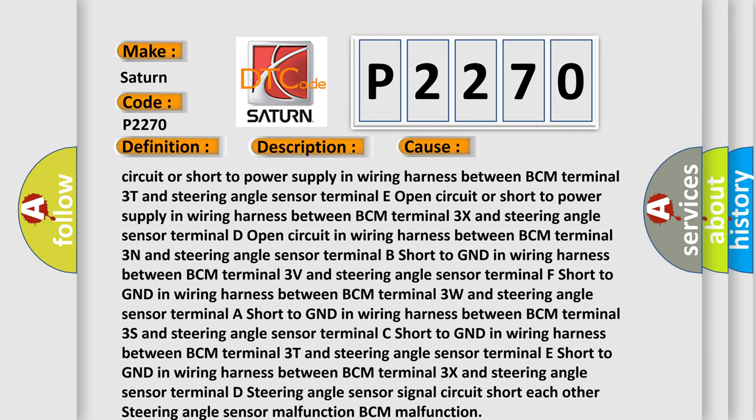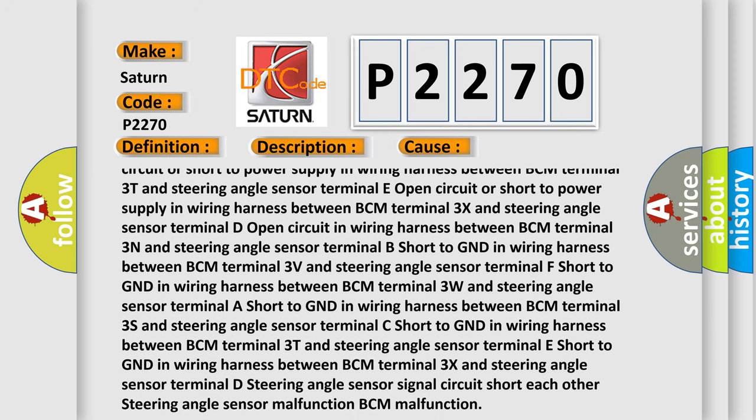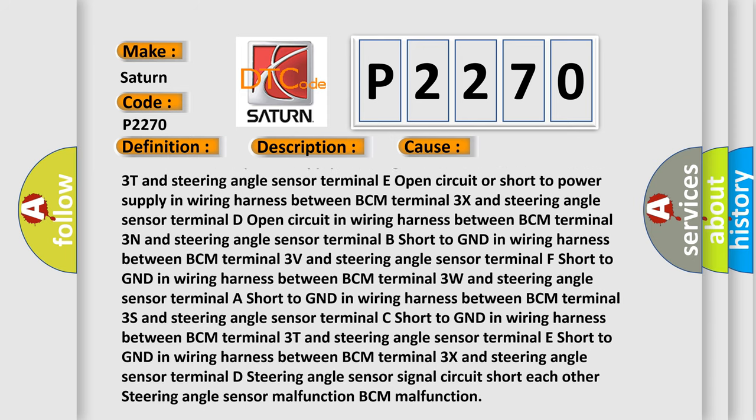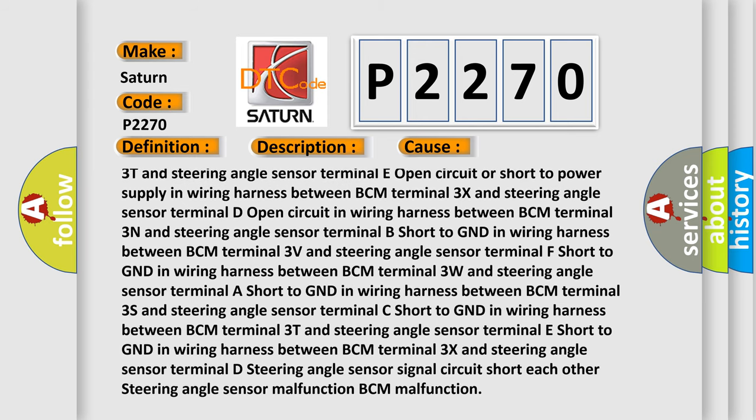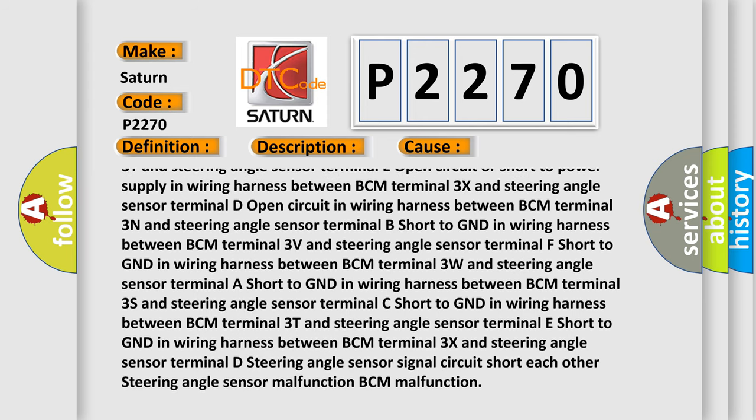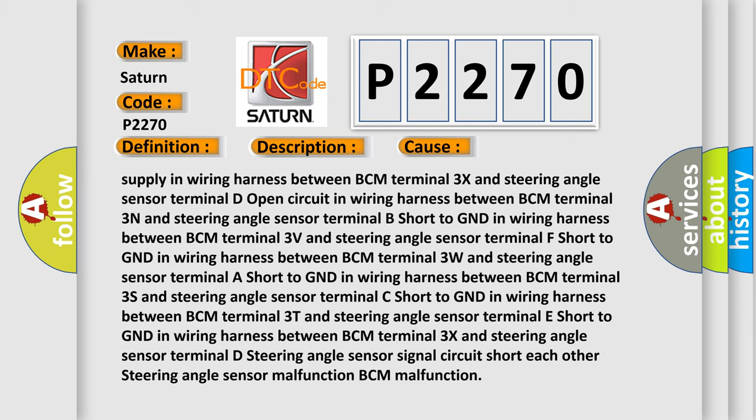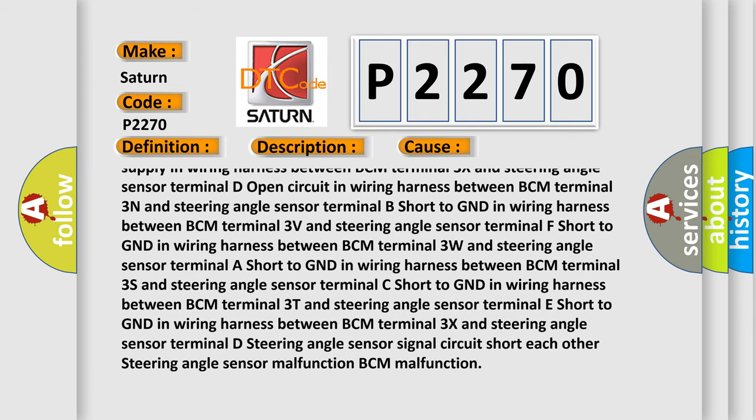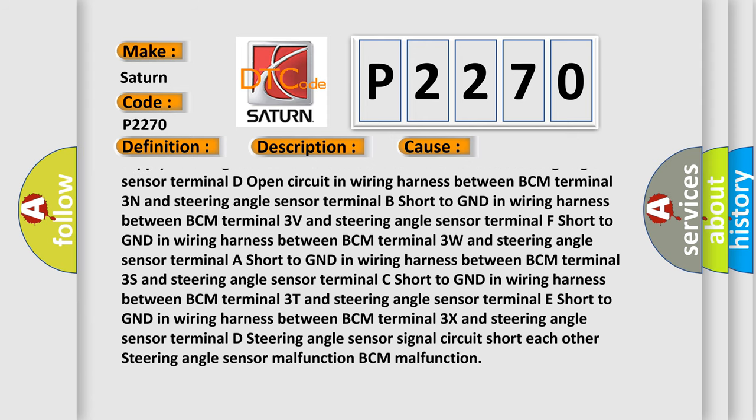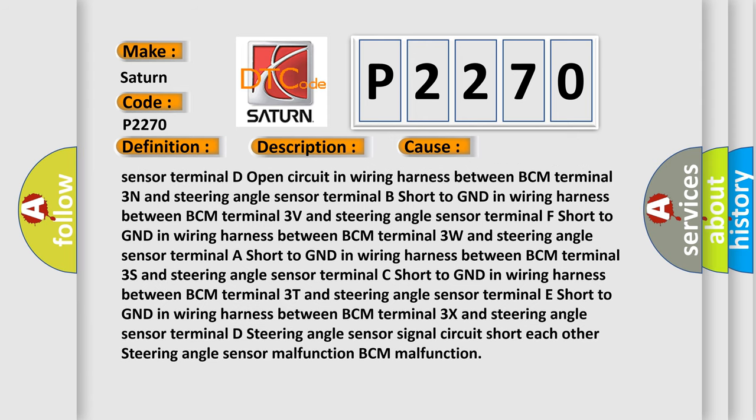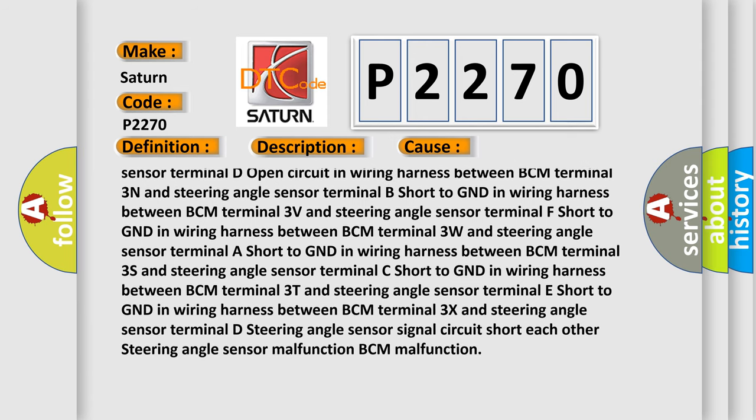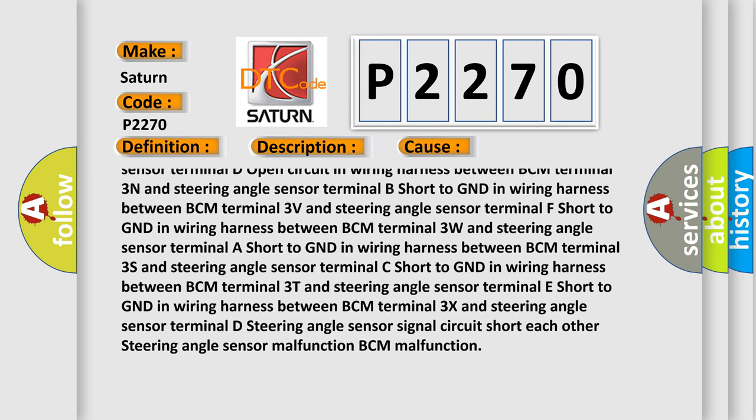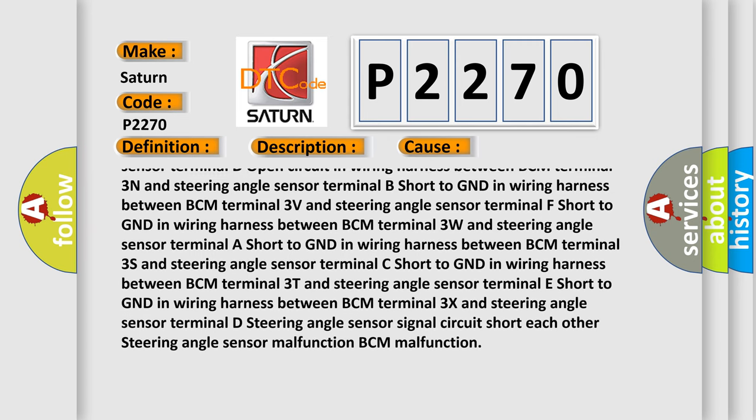Short to GND in wiring harness between BCM terminal 3V and steering angle sensor terminal F; short to GND between BCM terminal 3W and sensor terminal A; short to GND between BCM terminal 3S and sensor terminal C.